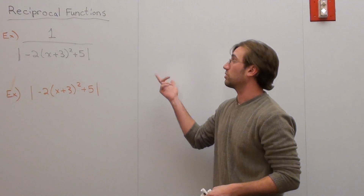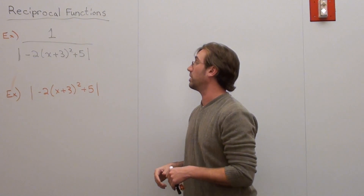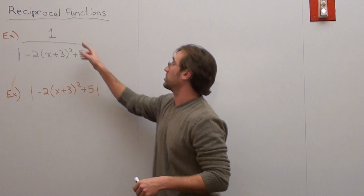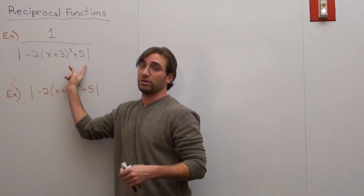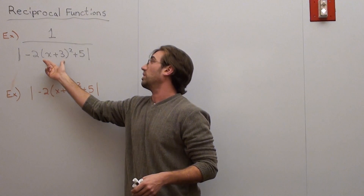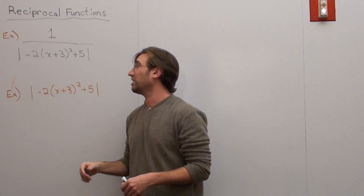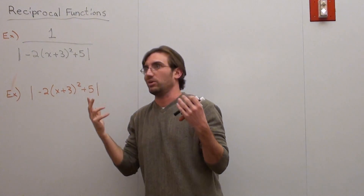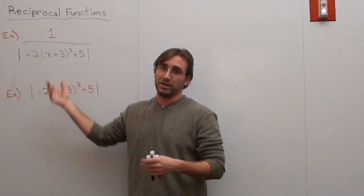Hello again. I'm going to do a lesson on reciprocal functions really quickly, and this one was actually brought by request. The problem I was given is 1 over the absolute value of negative 2 times the quantity x plus 3 squared plus 5. That's pretty difficult to graph or make a plot table of, because I've got this in the denominator.